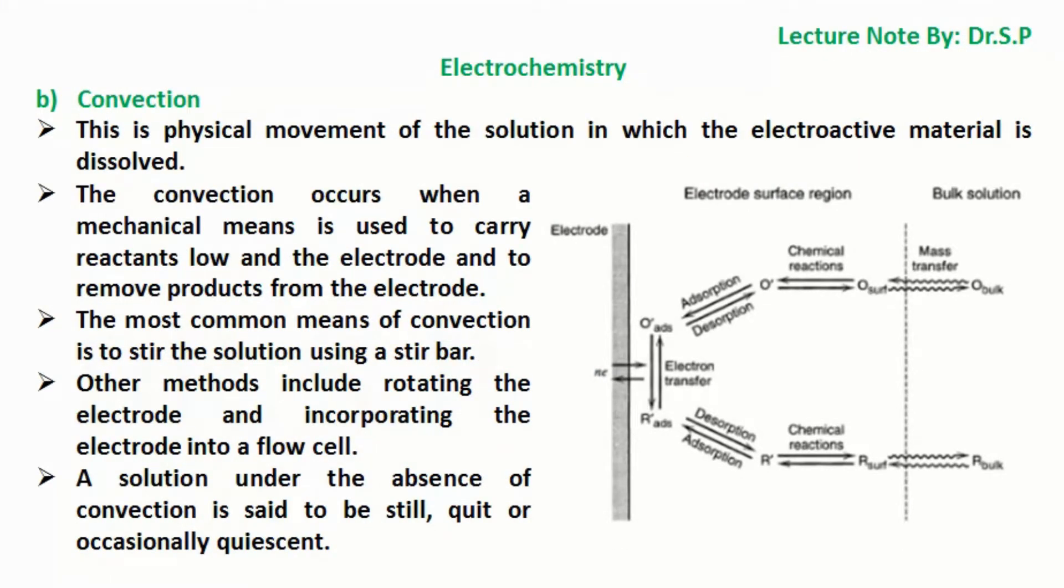Convection: This is physical movement of the solution in which the electroactive material is dissolved. The convection occurs when a mechanical means is used to carry reactants to the electrode and to remove products from the electrode. The most common means of convection is to stir the solution using a stir bar.